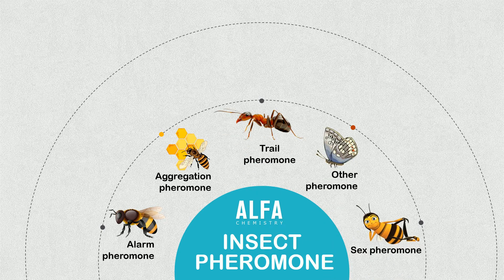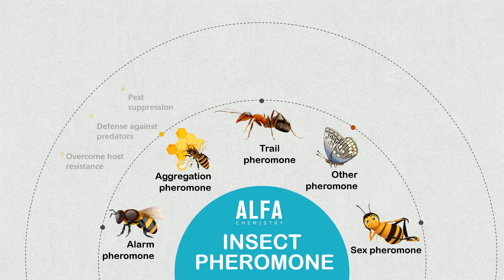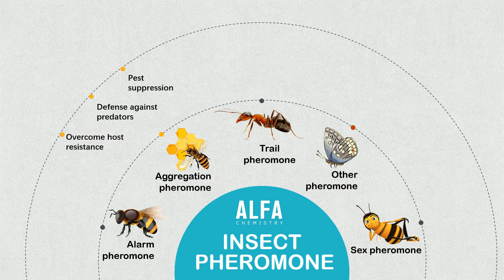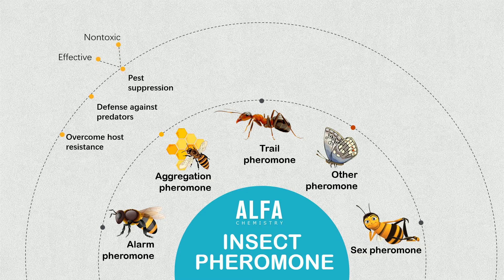Aggregation pheromones function in mate selection, overcome host resistance by mass attack, and provide defenses against predators. Aggregation pheromones are among the most ecologically selective pest suppression methods — they are non-toxic and effective at very low concentrations.